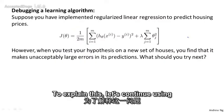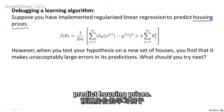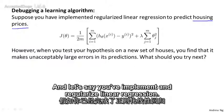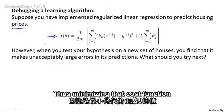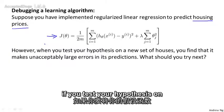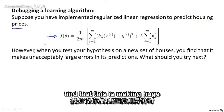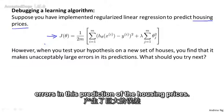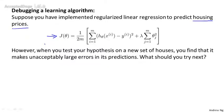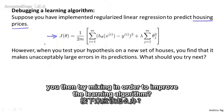To explain this, let's continue using our example of learning to predict housing prices. And let's say you've implemented regularized linear regression, thus minimizing that cost function J. But suppose that after you take your learned parameters, if you test your hypothesis on the new set of houses, suppose you find that it's making huge errors in this prediction of the housing prices. The question is, what should you then try next in order to improve the learning algorithm?